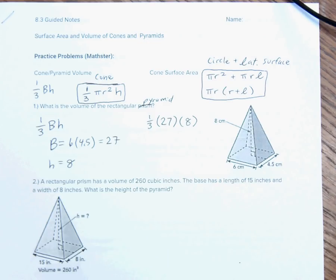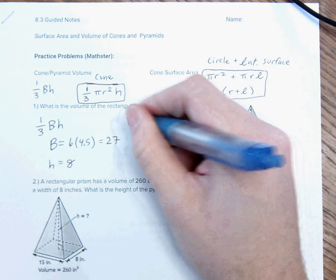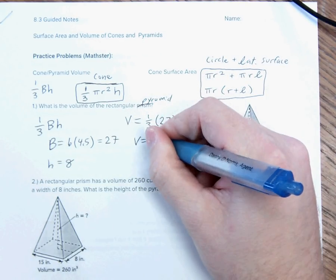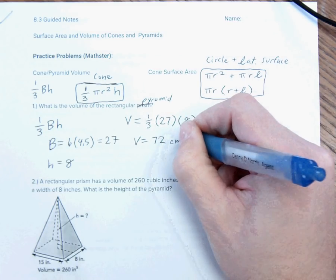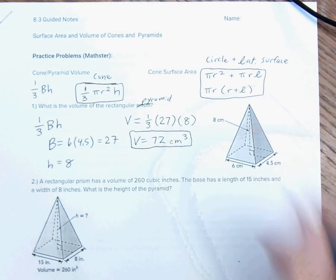So, one-third of 27 times 8. One-third of 27 is 9. 9 times 8 is 72. So, this is 72 centimeters cubed, because it's volume. Volume is always cubed units.